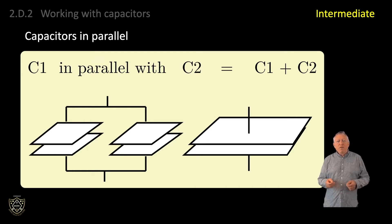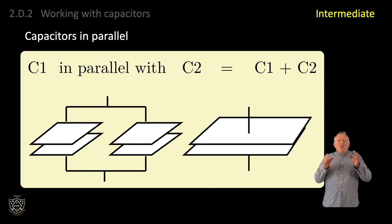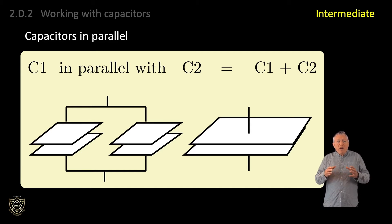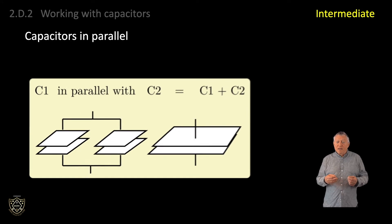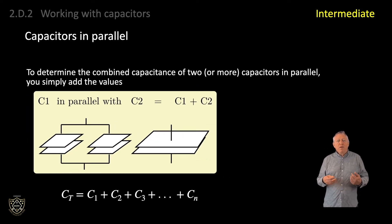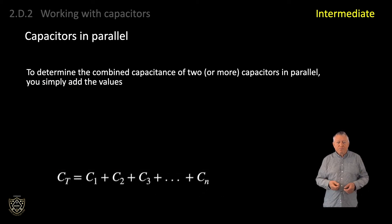As you will remember from syllabus item 2D1, the capacitance of a capacitor is directly proportional to the area of the plates. So when we are dealing with capacitors in parallel, the total capacitance CT equals C1 plus C2 plus C3 and so on.